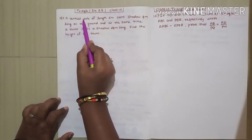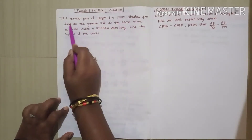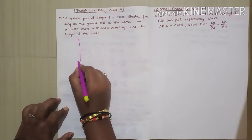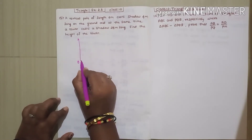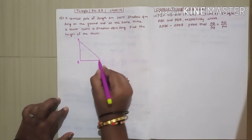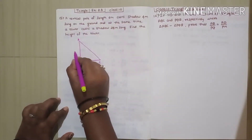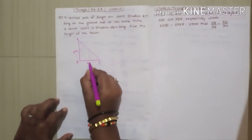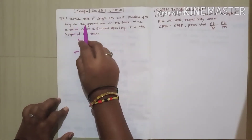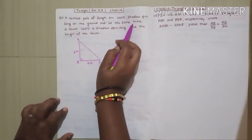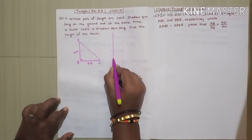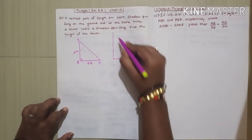Problem 15: A vertical pole of length 6 meters casts a shadow 4 meters long on the ground. I will take the vertical pole as AB and the shadow as BC. The pole will be perpendicular to the ground. At the same time, a tower casts a shadow 28 meters long. They did not give the length of the tower, only that it casts a shadow of 28 meters.